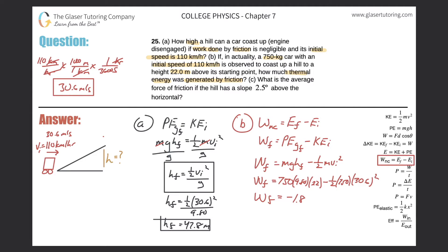The result is approximately −1.89 × 10⁵ joules. The negative sign makes sense because friction removes energy from the system. That takes care of letter B.